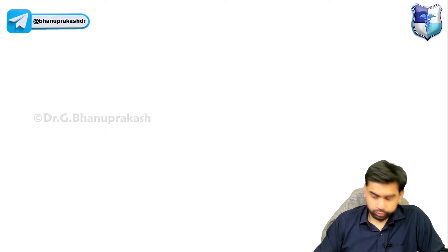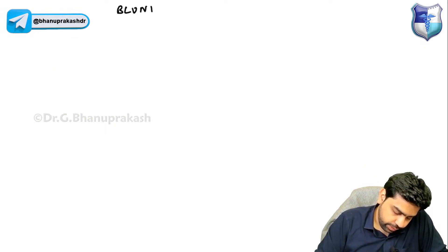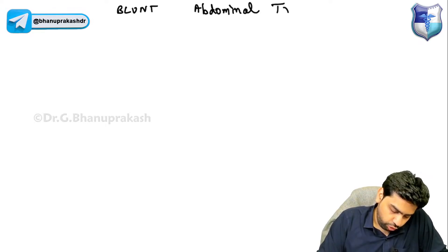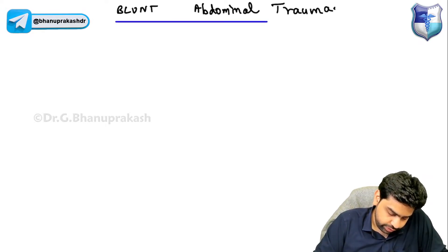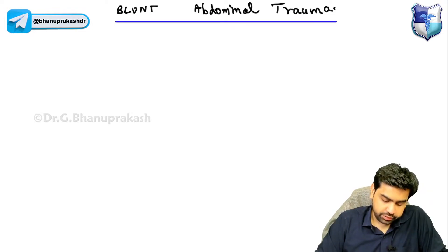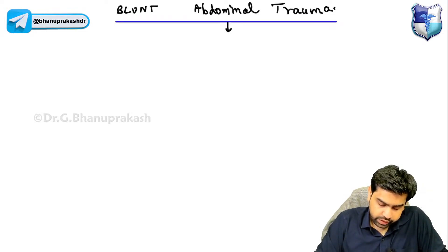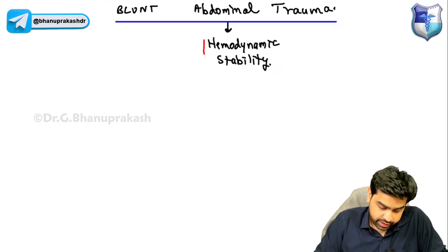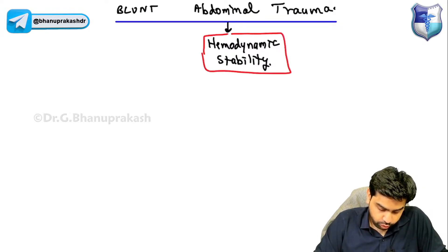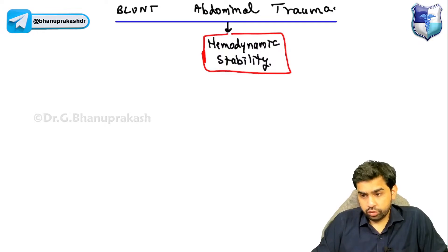Now coming to the actual management: when a patient comes with blunt abdominal trauma, the first thing is to look for features of peritonitis. If the features of peritonitis are not present, then you look for hemodynamic stability.